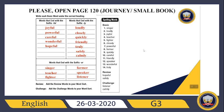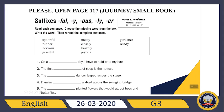Good job. Now let's check page 117 from your Journey, which is your small book. It says: read each sentence, choose the missing word from the box, write the word, then re-read the complete sentence. Let's read the first sentence together: 'On a ___ day, I have to hold onto my hat.' Which word is appropriate? On a windy day, I have to hold onto my hat.